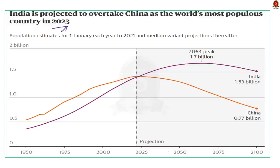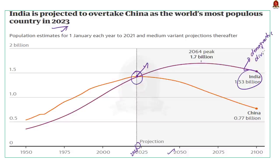This is the population projection of China and India. At the intersection point — that is in the year 2023 — India is set to overtake China. This is good for India because almost half of India's population comes under the working age group, that is between 15 and 64. So India is set to become the world's fastest growing economy in the coming years. But at the same time, India should be prepared to reap the benefits of demographic dividend by taking measures such as employment generation and skill development programs.